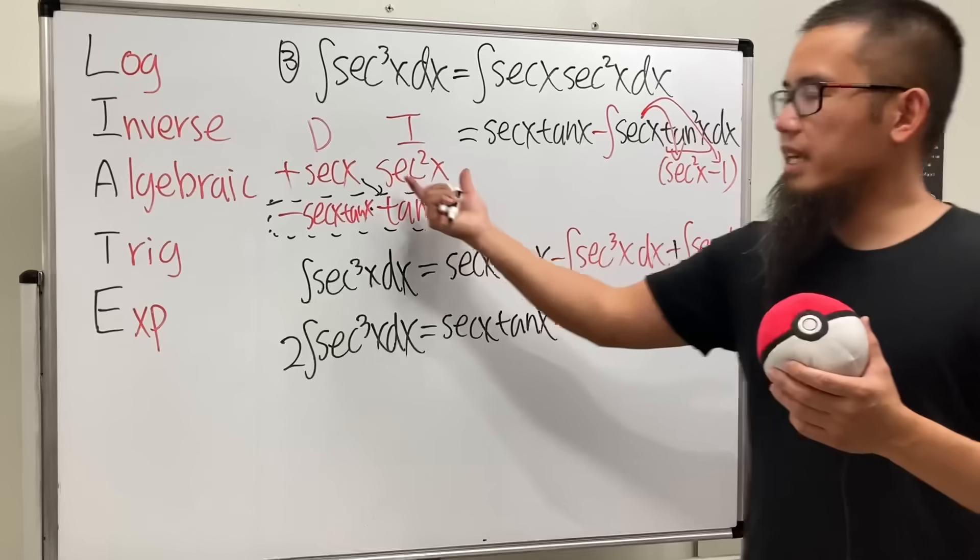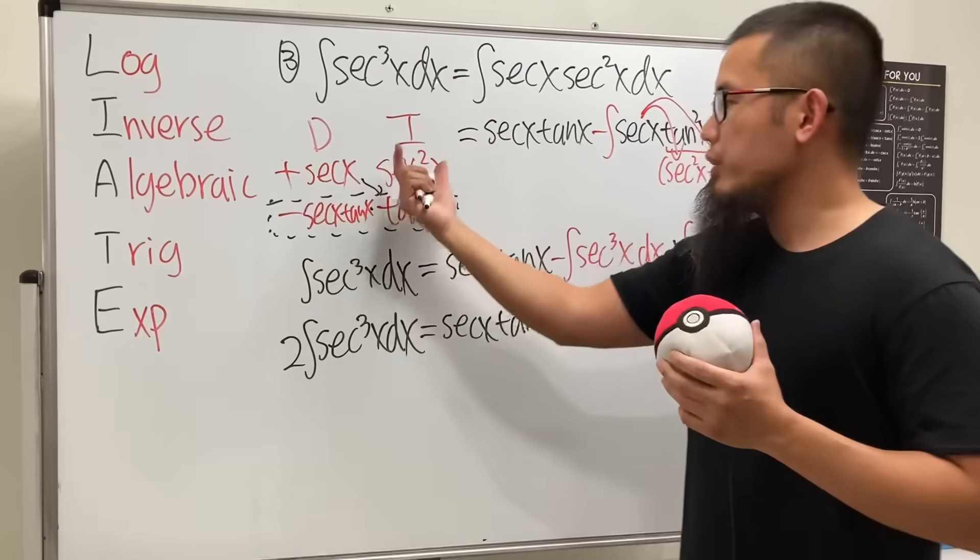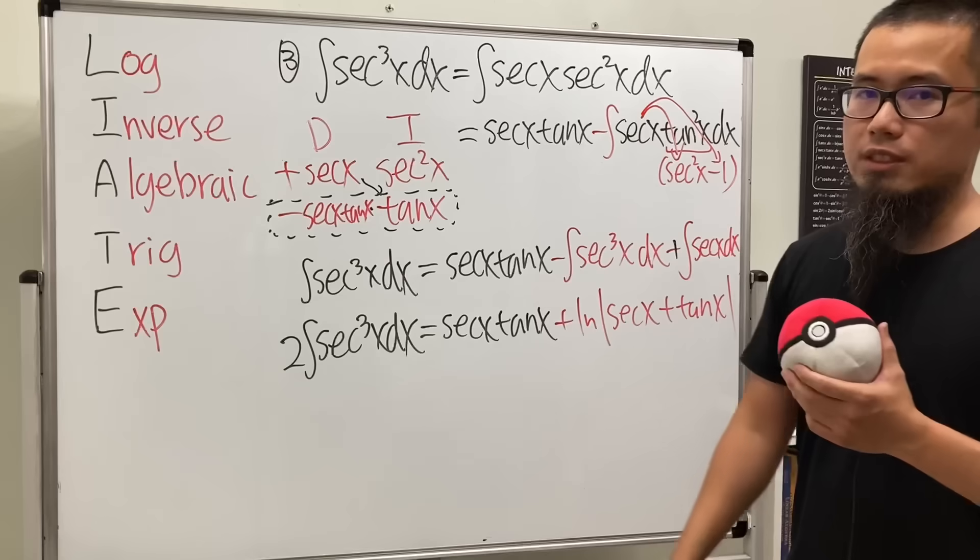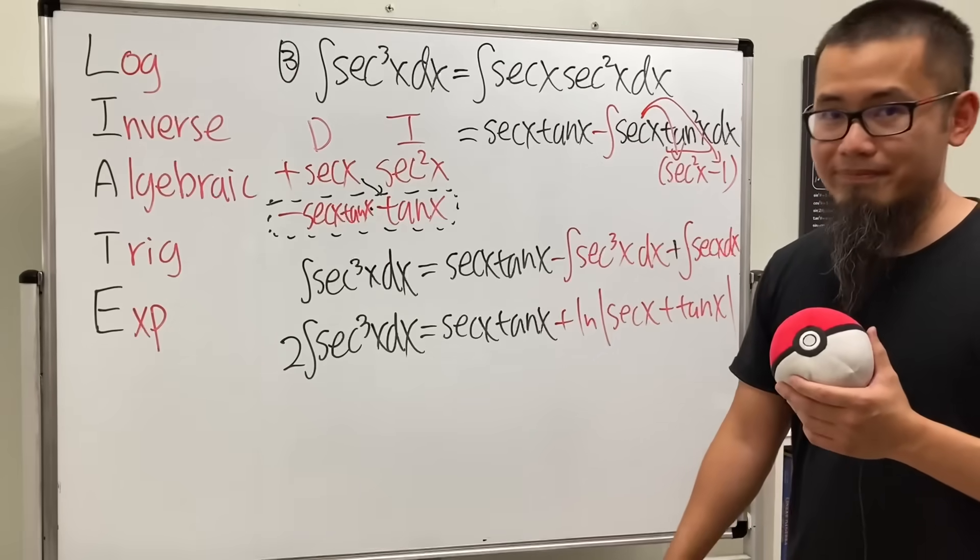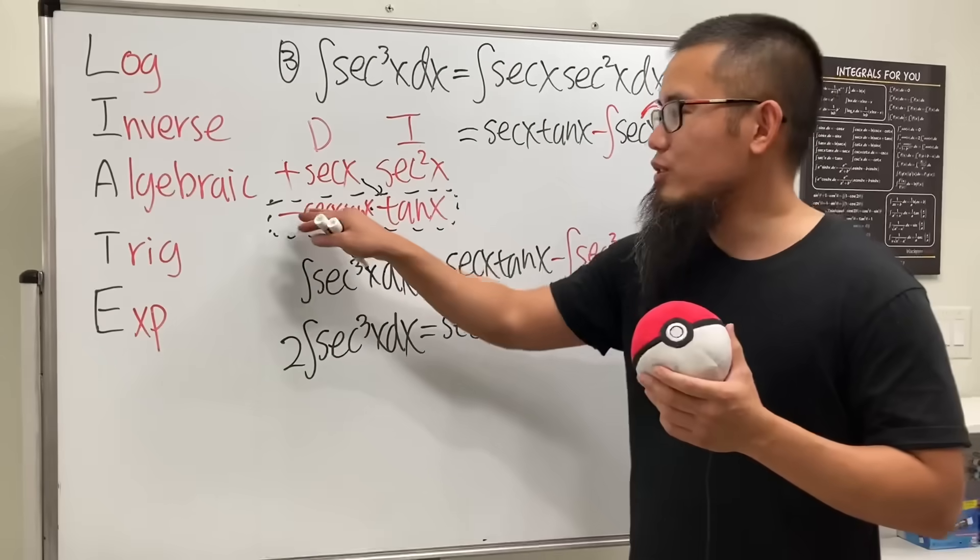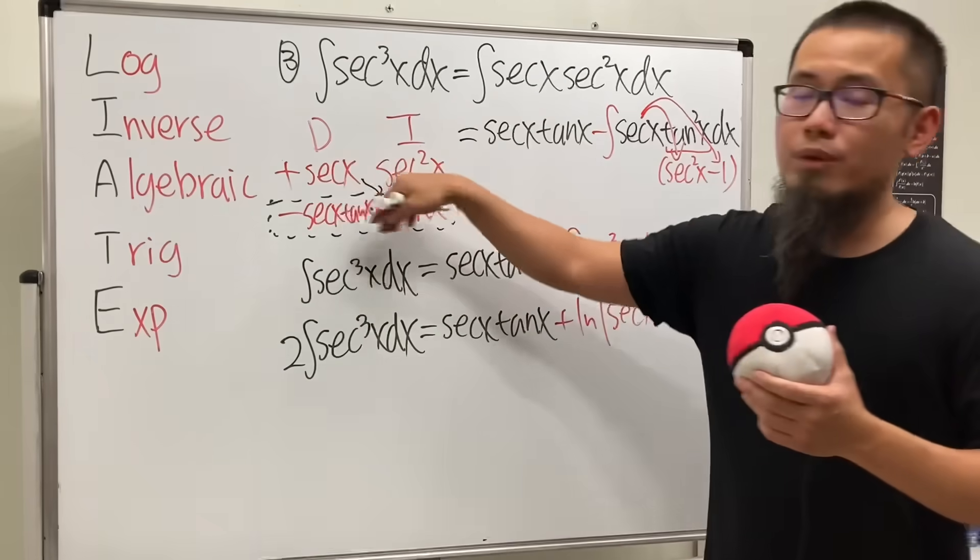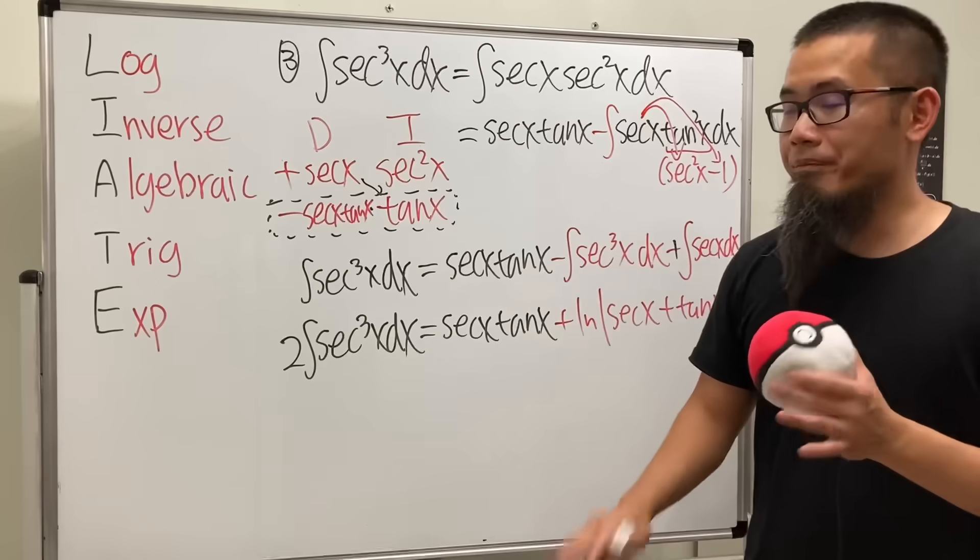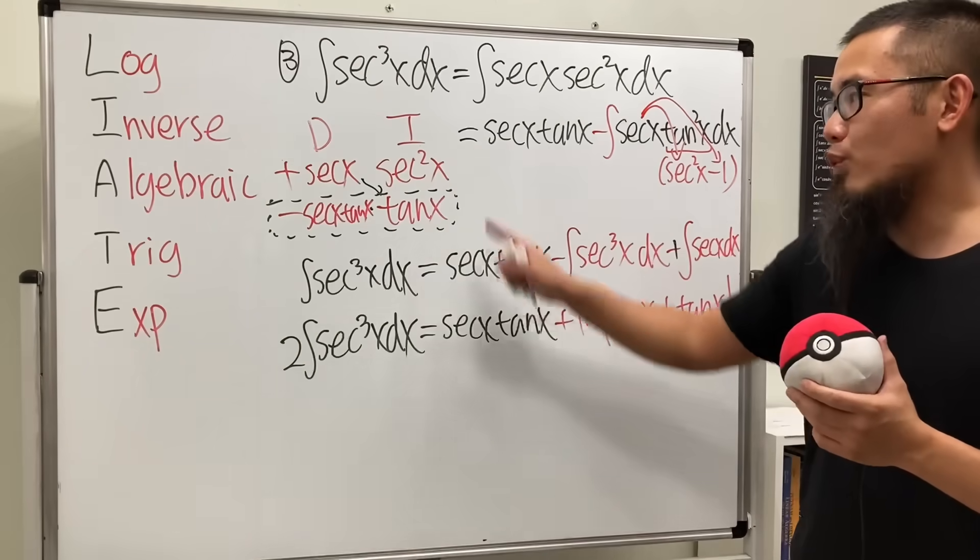And you see this right here is just secant x times tangent x and this is over there already and this right here is a standard result and we just know that that's going to be ln absolute value of secant x plus tangent x. If you really want to put secant x right here, yes, you can integrate that just by putting down a standard result.